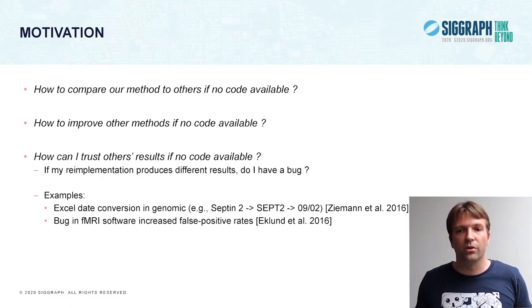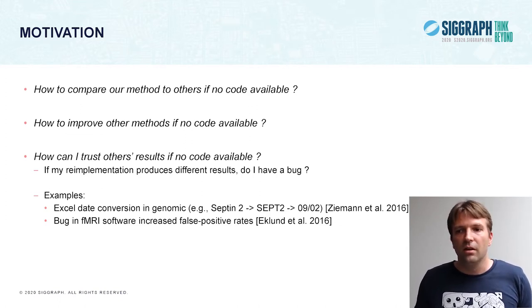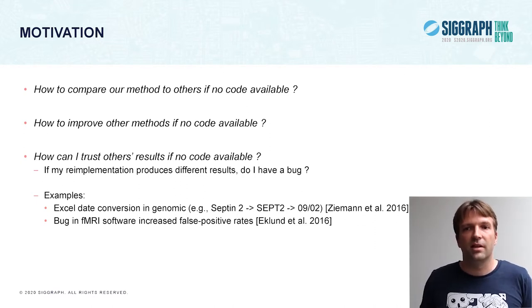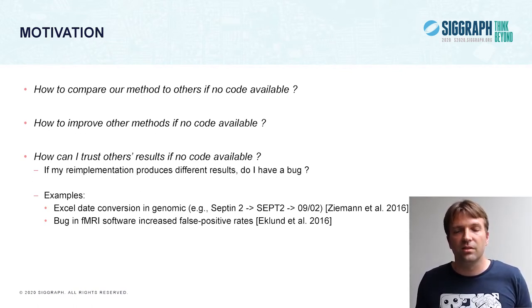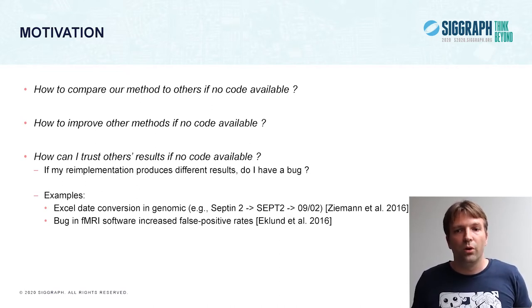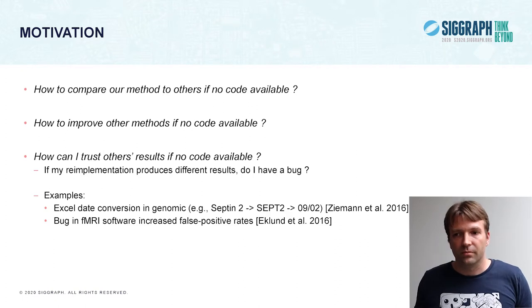And there are famous examples of bugs. For example, in genomics, we know that Excel is converting dates. The gene CEPTIN2, its code name is CEPT2, and that is converted to 2nd of September. This messes up further analysis and produces errors in papers. There is a famous bug in the popular fMRI software as well that increased the false positive rates and that also impacted many papers and published results.